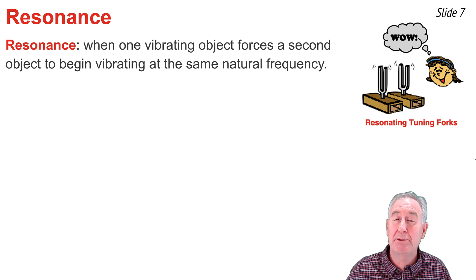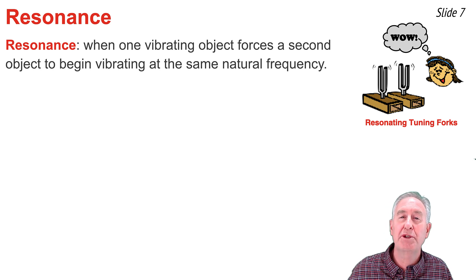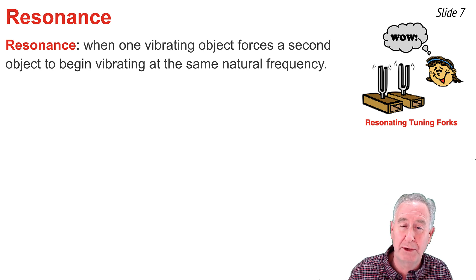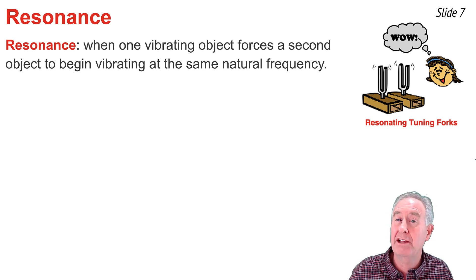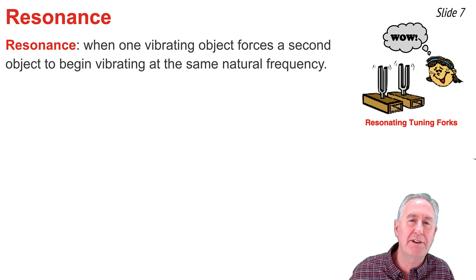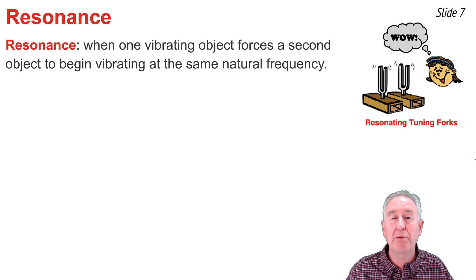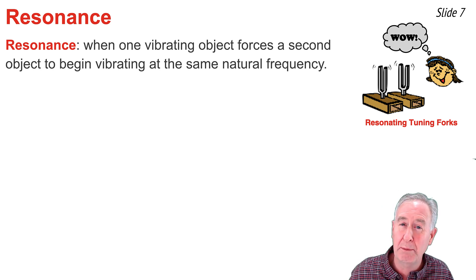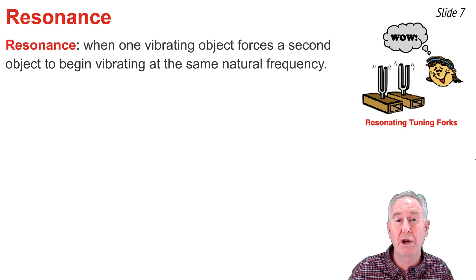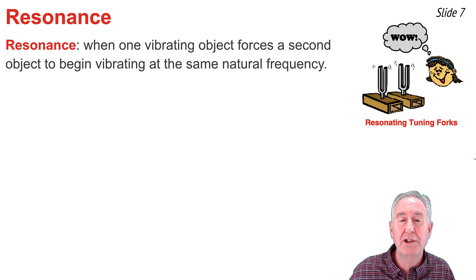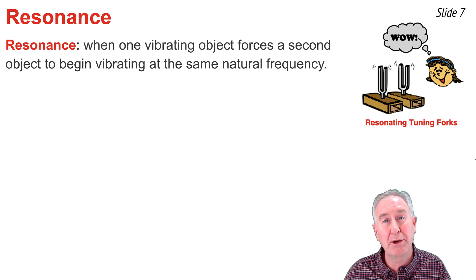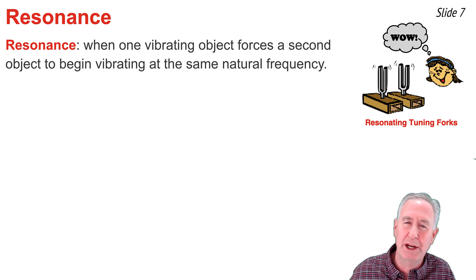Resonance occurs when one vibrating object forces a second object to vibrate at the same natural frequency. It is often demonstrated using two identical tuning forks mounted on wooden soundboards. Tuning fork A is struck and set into vibrational motion; after about 10–20 seconds it is stopped and pulled away, and everyone hears that tuning fork B — the one that was not hit — is now vibrating. Tuning fork A has forced tuning fork B into resonance because they share the same natural frequency, and sound waves from A impinge upon B and set it into motion.